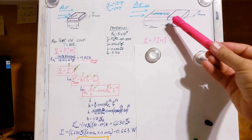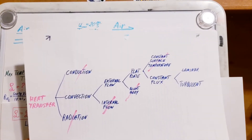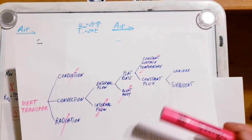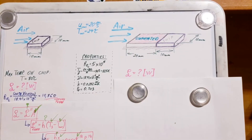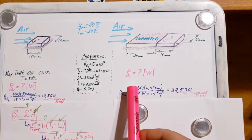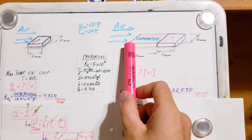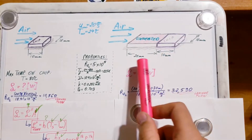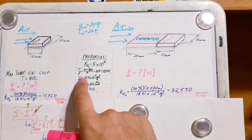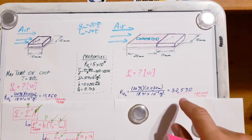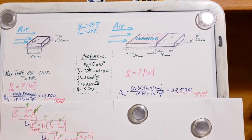Now let's go to the second scenario with the unheated starting length. We still have constant flux and a flat plate. We need to check if this longer setup is still laminar or turbulent. For the Reynolds number we now include the entire length — the unheated length plus the chip — so that's 30 millimeters or 0.030 meters. Plugging in our kinematic viscosity, we find a Reynolds number of 32,590, which is still laminar.